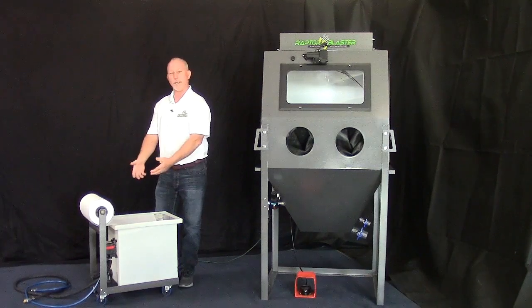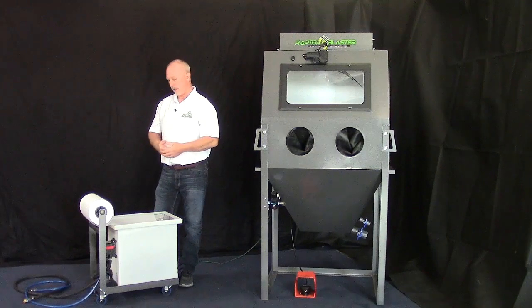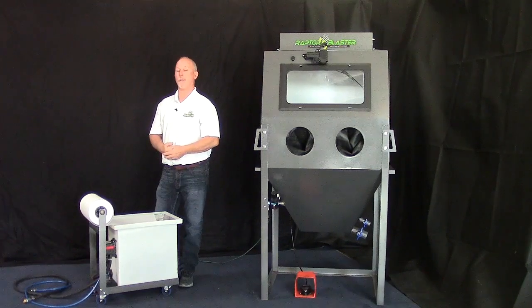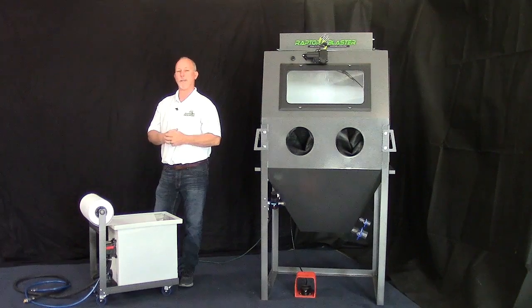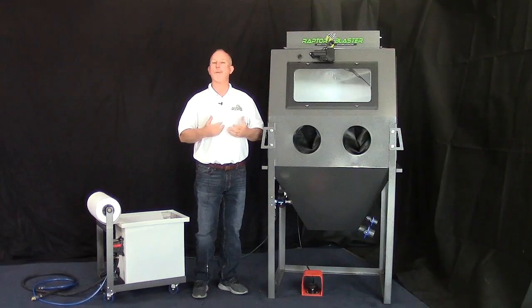It will drain the water, screen any of the particulates or dirt, grime, anything out of the water, and refill the tank with fresh water. So you're recirculating your rinse water from within the cabinet at all times. So that's the RB3630 slurry blast cabinet.